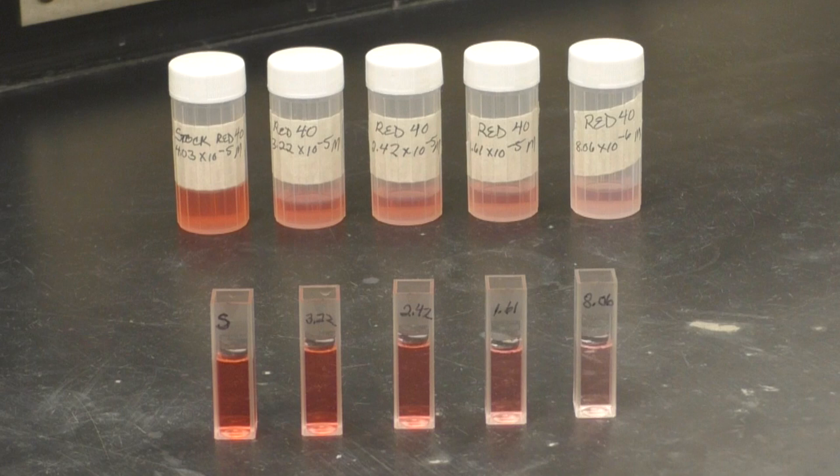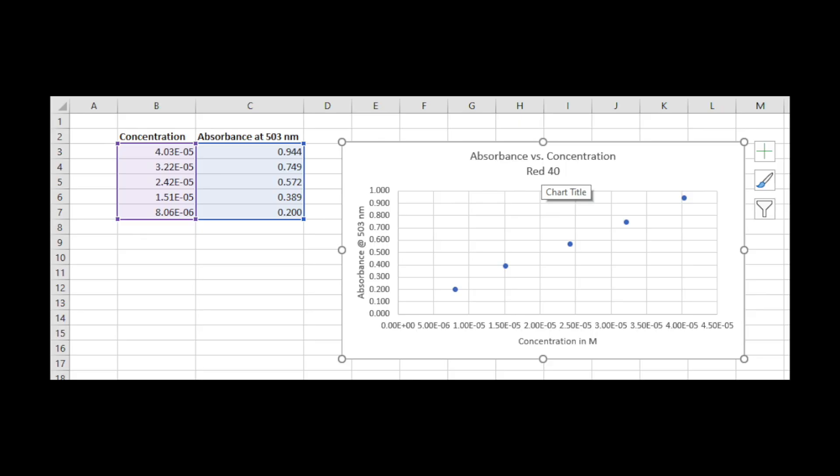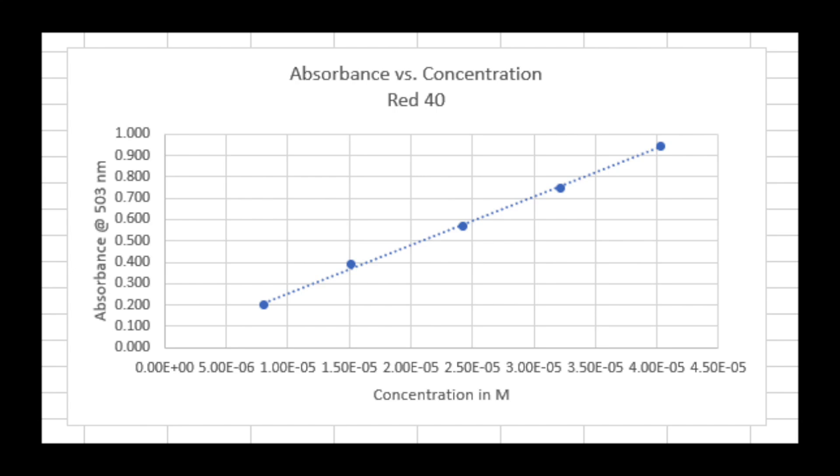This is called creating a dilution set. By measuring the absorbance of each of the known concentration solutions, a graph of absorbance versus concentration can be generated. This graph is known as a standard calibration curve.